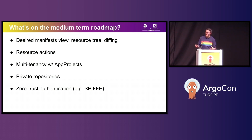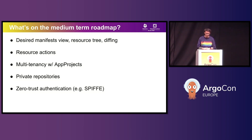Here's the stuff we're looking at for the rest of this year — a short to medium term roadmap. The highest priority is to close the gap that still exists between this and the standard Argo CD experience. Things like viewing desired manifests in the UI, having the UI calculate and show the diff between desired and live states, as well as the resource tree that provides so much insight into your applications. We already have plans for how to make this work and Jan will begin writing code for that shortly — something you can expect in an upcoming minor release.